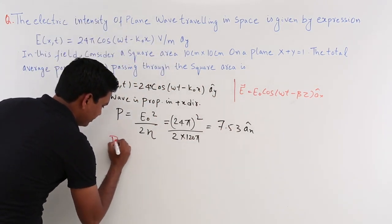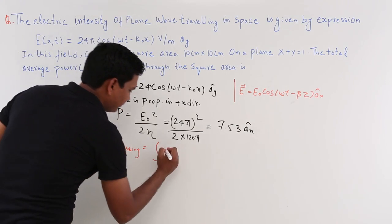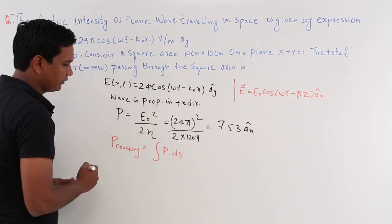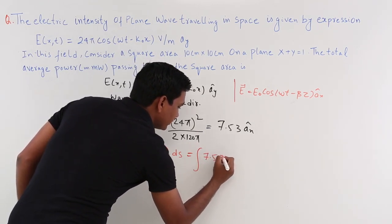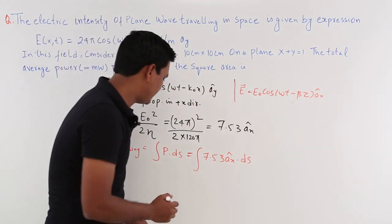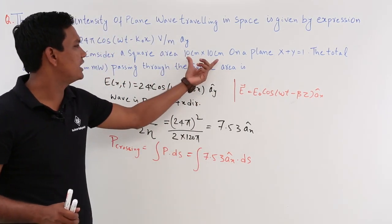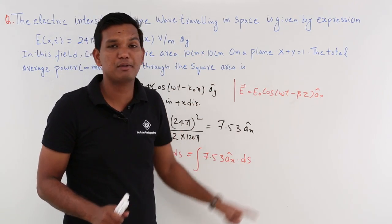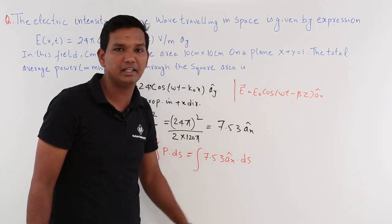The power crossing the surface is P_crossing = ∫ P · ds over the area. This comes out to be the integral of 7.53 x̂ · ds. When we say ds, remember this is a dot product with the area element. The 10 × 10 cm square lies on the plane x + y = 1, so we need to find the unit normal vector of that plane.